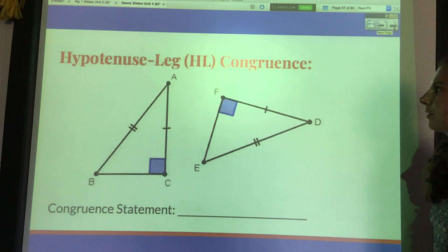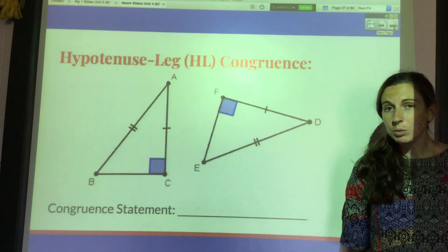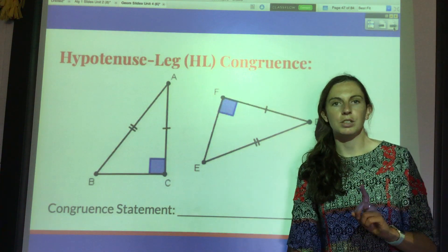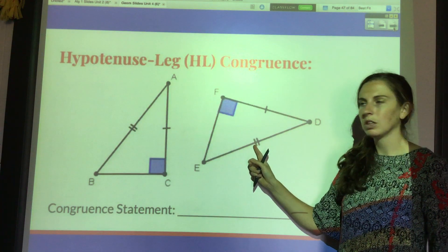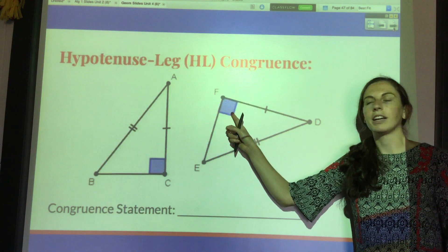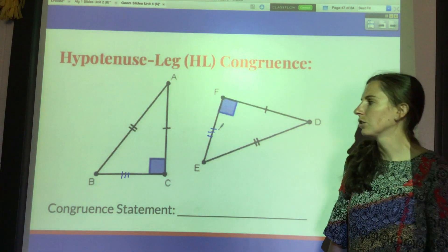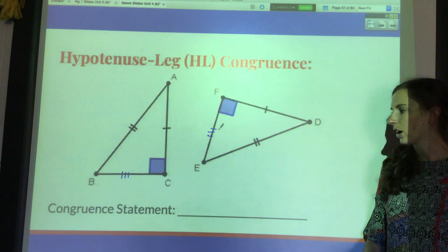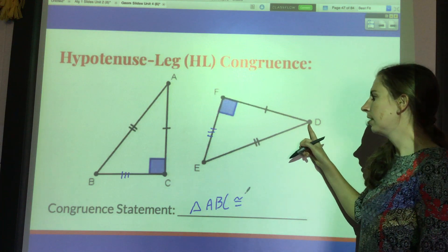The last of the five is the hypotenuse-leg congruence theorem. It only works for right triangles because they're the only ones that have a hypotenuse and a leg. First, verify it's a right triangle — yes, that is the case here. I have a congruent hypotenuse and a congruent leg. I don't have all three sides, but that's okay because since it's a right triangle I could solve for the third side. Basically this is side-side-side extended to right triangles. So triangle ABC is congruent to triangle DEF.